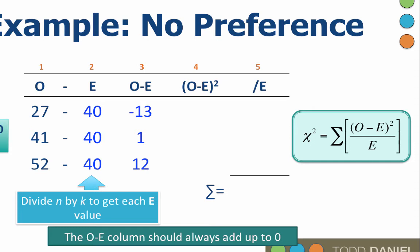Well now we square each value in column three, and that gives us the fourth column. For the fifth column, we will divide each value in the fourth column by E. Now for this test, all of the expected values are the same, 40. So we divide all of the fourth column values by 40. Notice how when the O and E values are similar, the chi-square values are small. The more that the observed deviates from the expected, the larger the chi-square values.